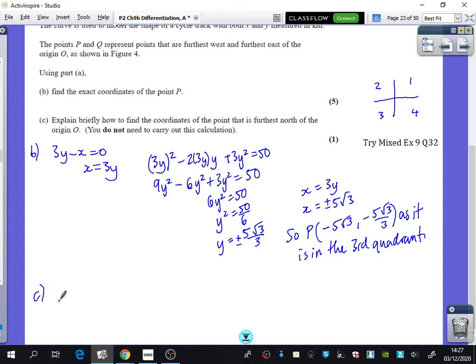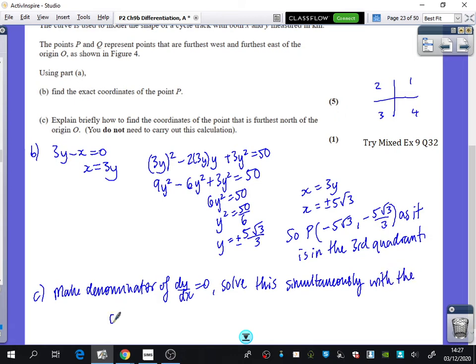So for part C of the question, I would make the denominator of dy by dx equals zero. Solve this simultaneously with the curve equation, and I would take the positive answers for the most northern.